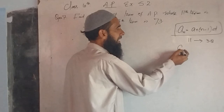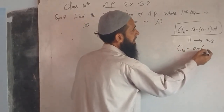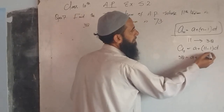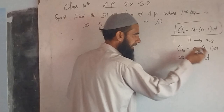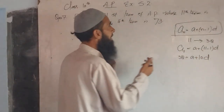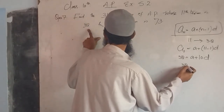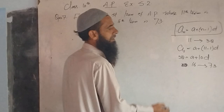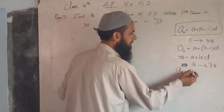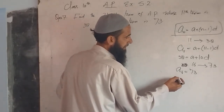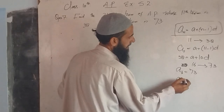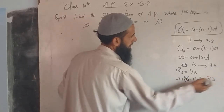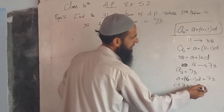For the 11th term: a_11 = a plus (11 minus 1) into d, so 38 = a plus 10d. This gives us our first relation. Similarly, for the 16th term: a_16 = 73, so a plus (16 minus 1) into d = 73, that is a plus 15d = 73. This gives us our second relation.